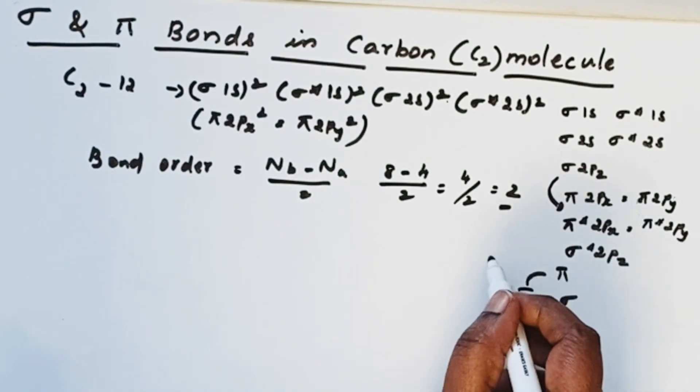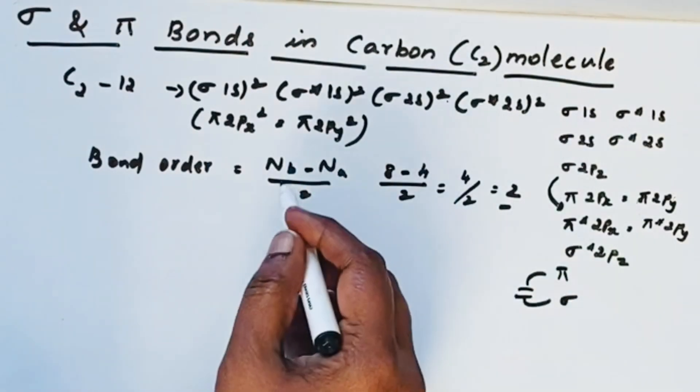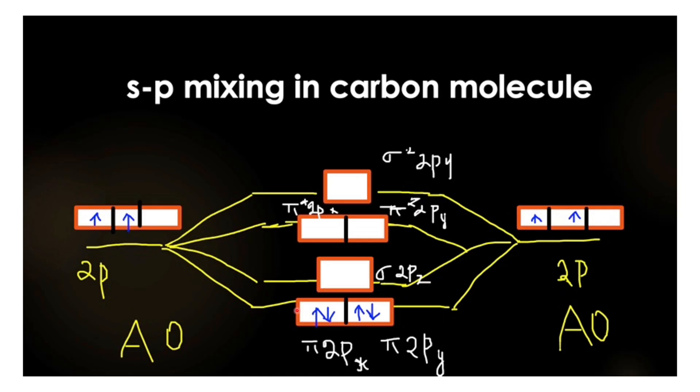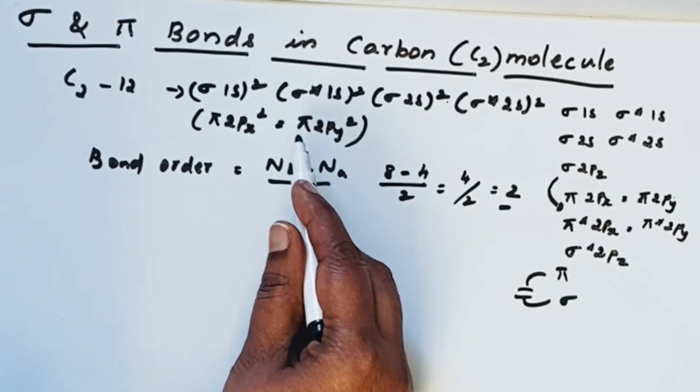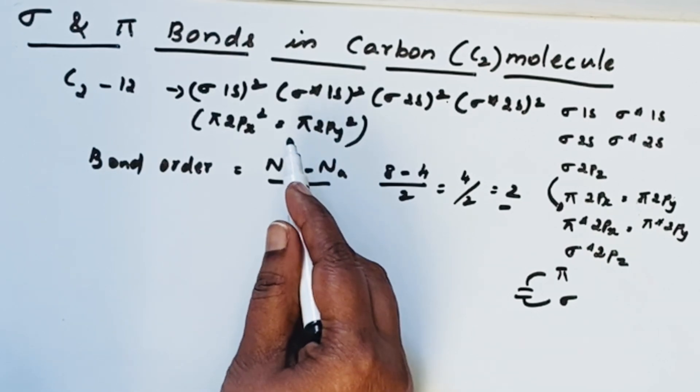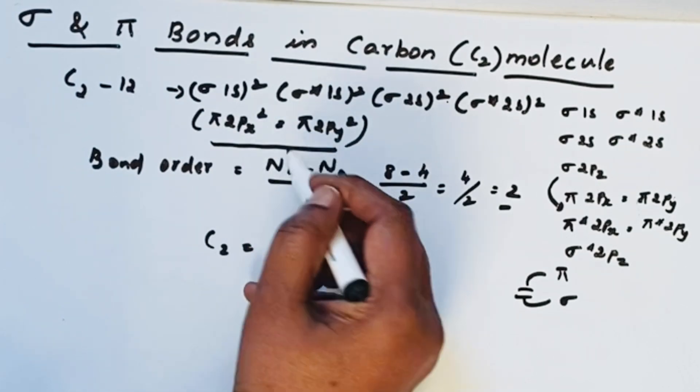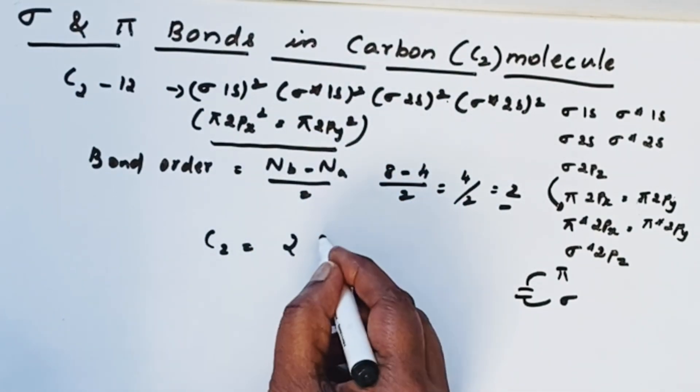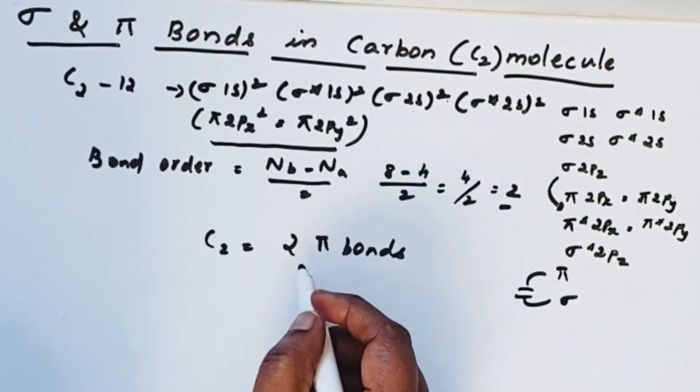But in carbon molecule, both bonds are pi bonds. Because if you look at the molecular orbital diagram of carbon molecule, you can see that the highest occupied molecular orbital is pi 2px and pi 2py. So because of that, four electrons in pi orbitals are involved that result in the formation of two pi bonds. These four pi electrons are involved, so there are two pi bonds present. There are no sigma bonds in C2 molecule.